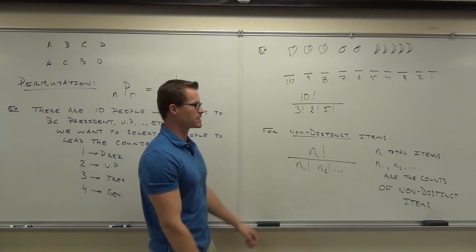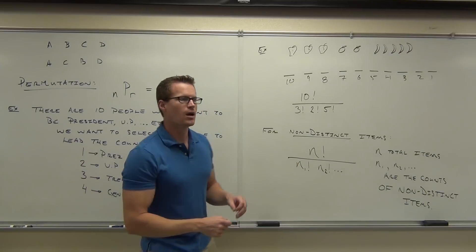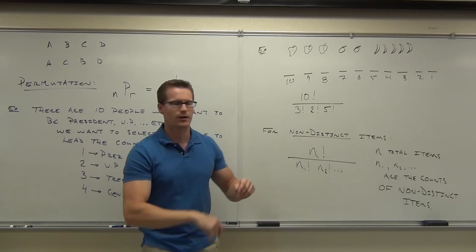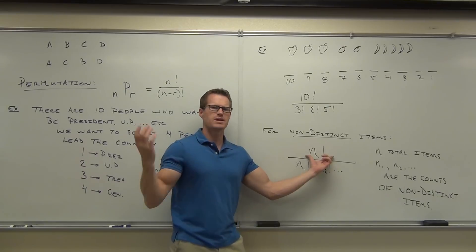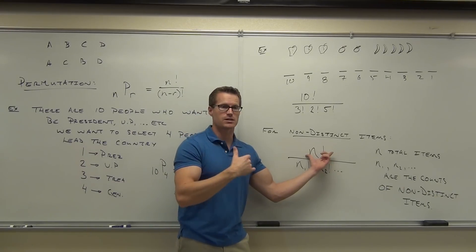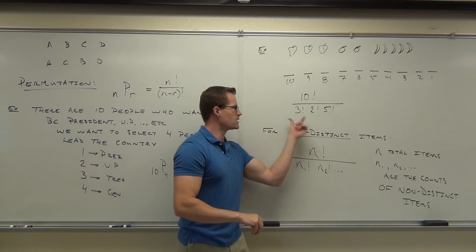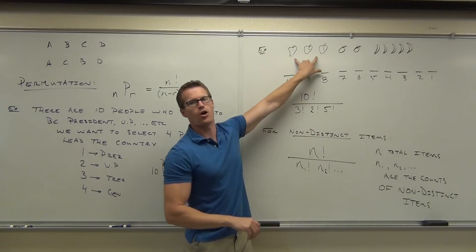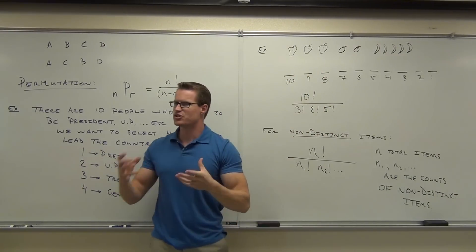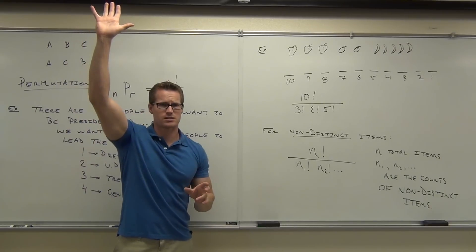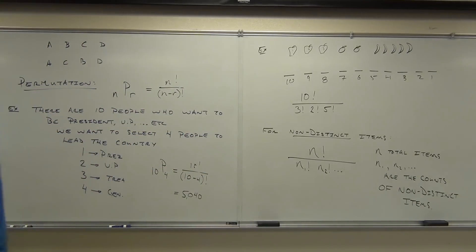If we happen to have some non-distinct items, so items that are the same, the way we show the different arrangements, or the ones that really matter, is we have our n factorial - that would be everything if it were all distinct. But we're going to take away or eliminate some of those arrangements of those items that are the same, because they don't really change the big picture of my arrangements. Would you raise your hand if you're still with me on this idea? Good deal. Let's practice one of these to really get the hang of it.